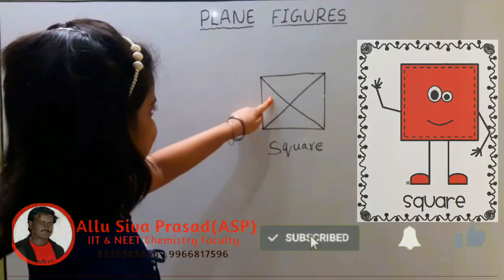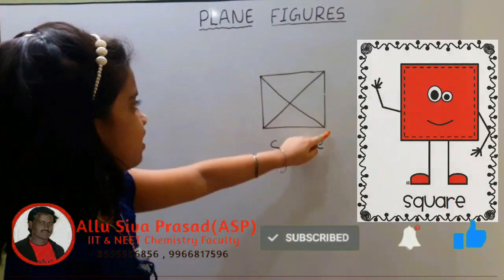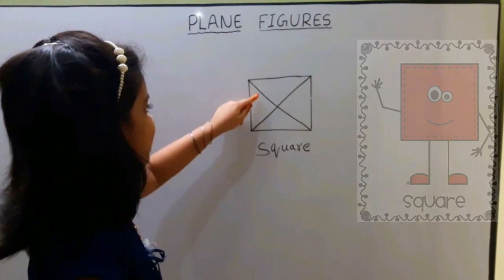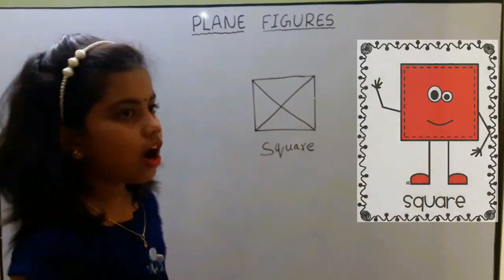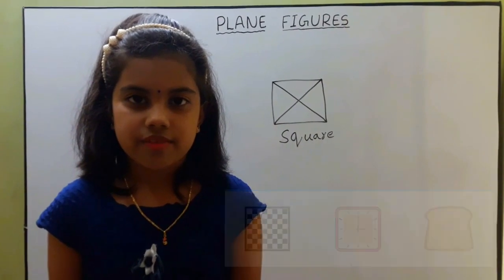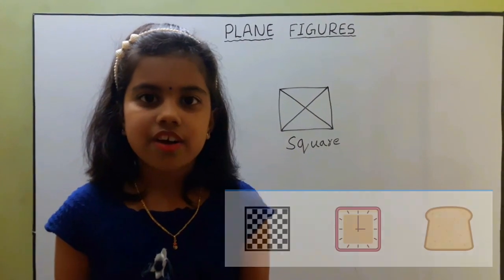Look at this line. It joins the opposite vertices. It is called diagonal. In square, it has two diagonals of same measure. Examples of square in real life are square clock and bread.